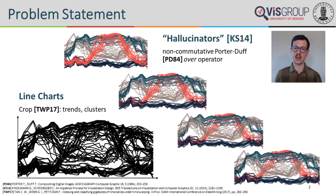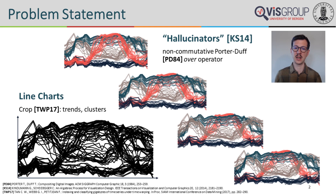Unfortunately, individual lines become harder to distinguish and interpret with an increasing number of lines. A popular remedy to distinguish individual lines is the use of color and standard alpha blending. Unfortunately, the blending order is currently either ignored or naively used — for example, assuming it is implicitly given by the order in which the data was saved in a file.